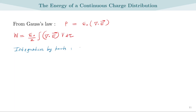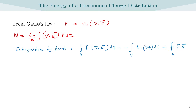We can rewrite this integral by using the formula for integration by parts. If we have a volume integral with a function f multiplying the divergence of a vector A, this equals the negative of the integral of A dot (gradient of f) d-tau plus the surface integral of f times A dot dA. Accordingly, the work done equals epsilon-0 over 2 times the negative integral of E dot (gradient of V) d-tau plus the integral of V times E dot dA.